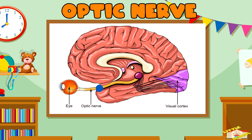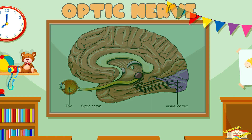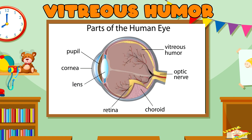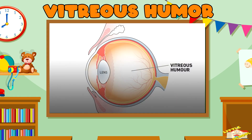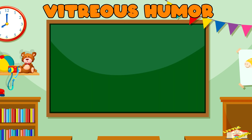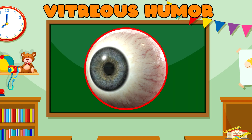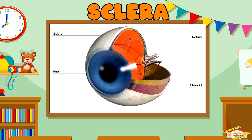Optic nerve: The optic nerve is a bundle of nerve fibers that transmit visual information from the retina to the brain for processing. Vitreous humor: The vitreous humor is a clear, gel-like substance that fills the space between the lens and the retina. It helps to maintain the eye's shape. Sclera: The sclera is the white, tough outer layer of the eye that provides protection and structure.